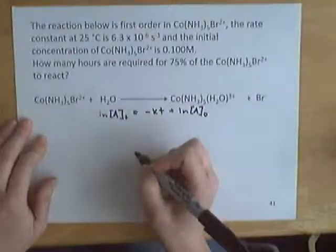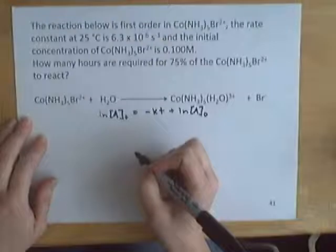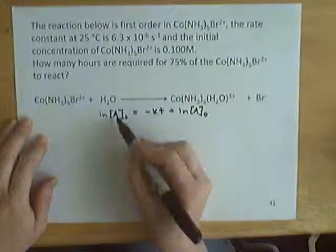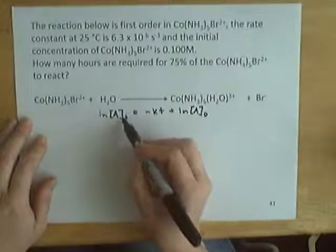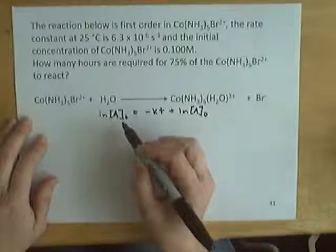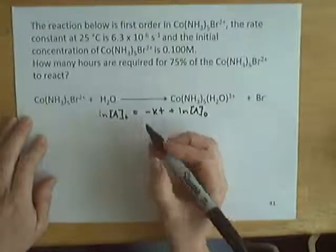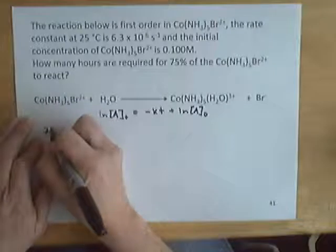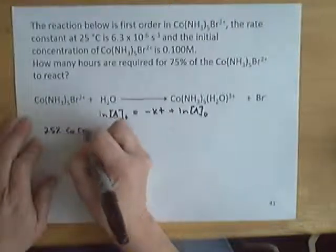Now here we're being asked how many hours are required until 75% of the cobalt complex reacts. What we need to plug in is the actual concentration of the cobalt complex at our ending time. If 75% reacts, 25% of the cobalt complex remains.